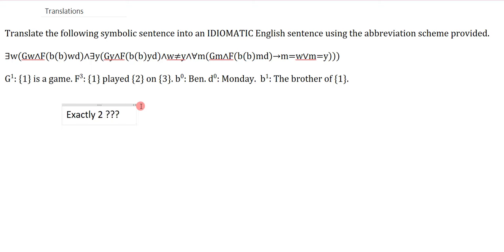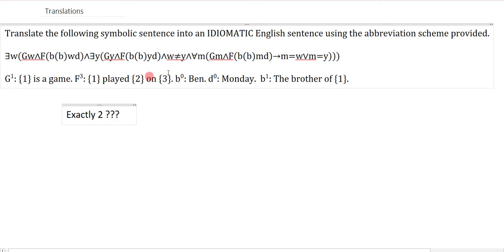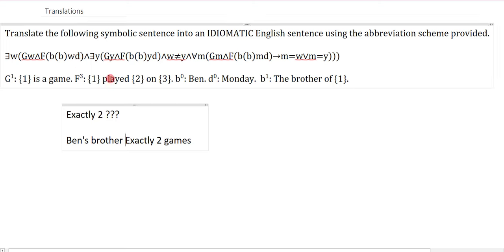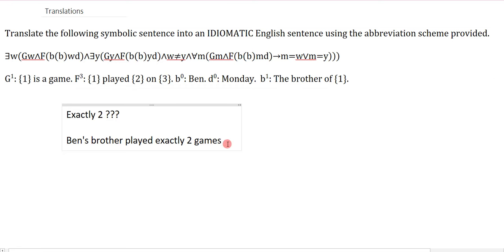What this is trying to capture is the relationship of exactly two. Here's one thing, here's another thing that's not the first — so that's two — and this says anything that has this property is the first or the second, so that's exactly two. At this point I can just fill things in. G is a game, so I'm talking about exactly two games. And then what's the property? Played on... I just have to figure out my operation. B of B is the brother of Ben, and D is Monday. So reading from the big predicate outwards, this says Ben's brother played exactly two games on Monday.